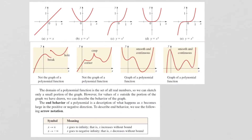In terms of understanding the graphs of polynomial functions, first let's recall the graphs of our basic power functions: y equals x, y equals x squared, y equals x to the 3rd, y equals x to the 4th, and y equals x to the 5th. The even degree power functions are similar — they are U-shaped graphs — while the odd degree power functions are also similar in that they go up on one side and down on the other. In the even degree case, they go up on both sides.